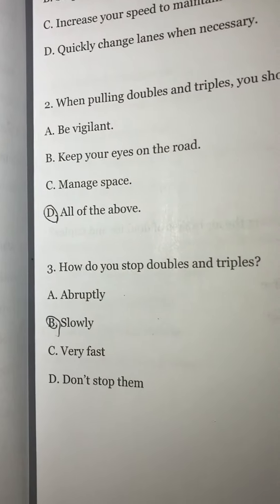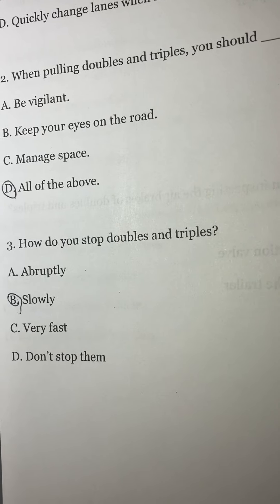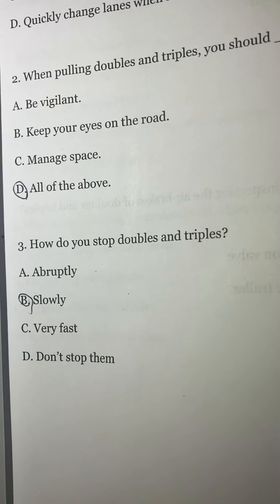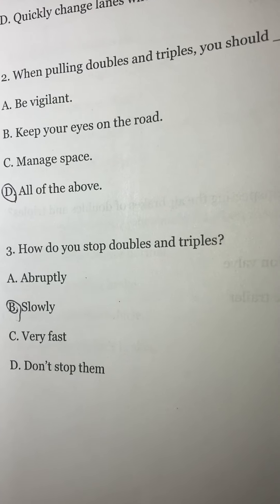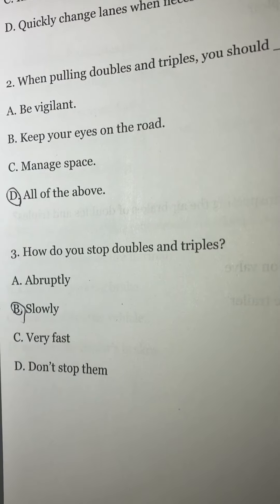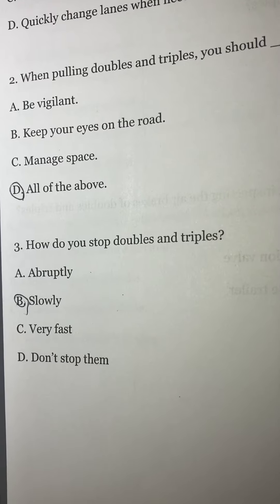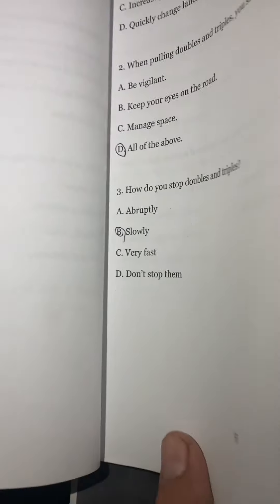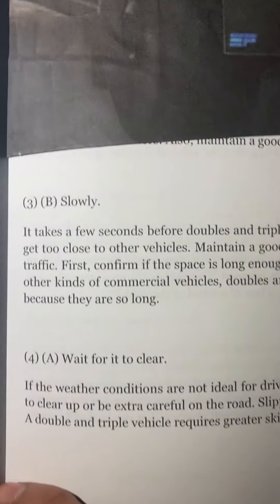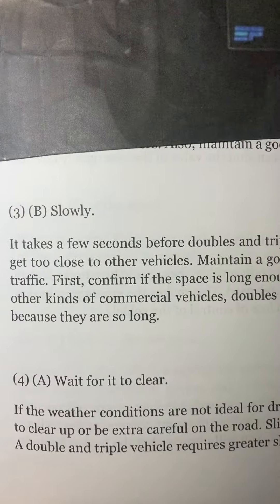Number three: how do you stop doubles and triples? A) abruptly, B) slowly, C) very fast, or D) don't stop them. The answer is B, slowly.